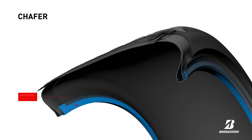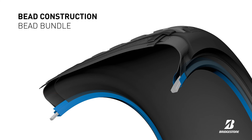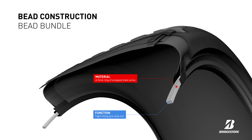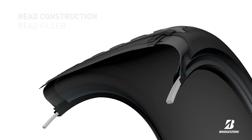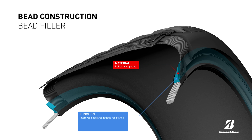The chafer is a coated fabric that protects the body ply cords from wheel damage. The bead construction is made out of a thick ring of wrapped steel wires and a rubber compound. The bead construction helps ensure the tight fitting of the tyre onto the rim. It also provides more comfort and better handling. And the last component is the bead filler, which is made of rubber compound and improves bead area fatigue resistance and can lead to handling and comfort enhancement.